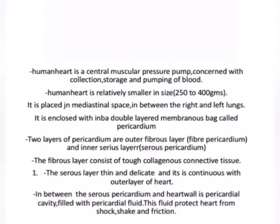The heart is enclosed within a double-layered membranous sac called the pericardium. The two layers of pericardium are the outer fibrous layer or fibrous pericardium, and the inner serous layer or serous pericardium. The fibrous layer consists of tough collagenous connective tissue. The serous layer is thin and delicate and is continuous with the outer layer of the heart. In between the serous pericardium and the heart wall is the pericardial cavity, filled with pericardial fluid. This fluid protects the heart from shock, shake, and friction.